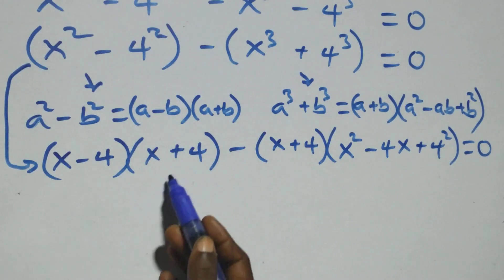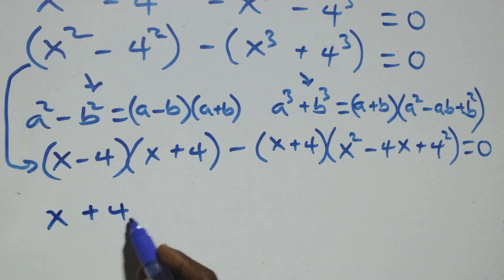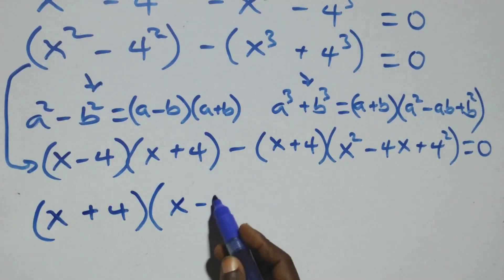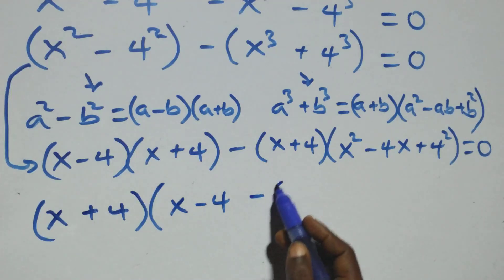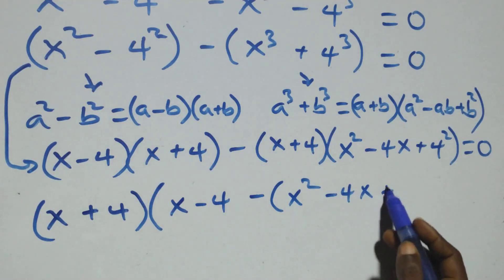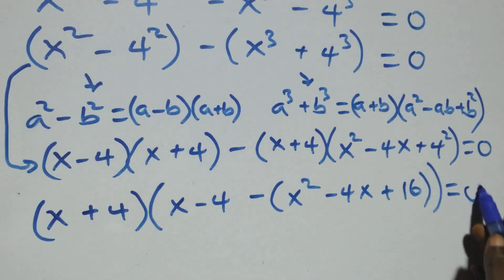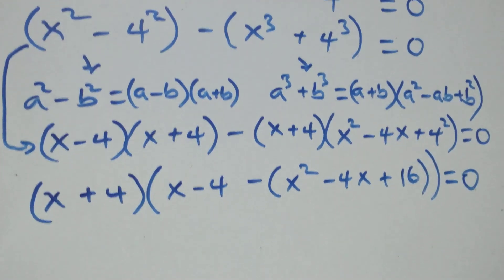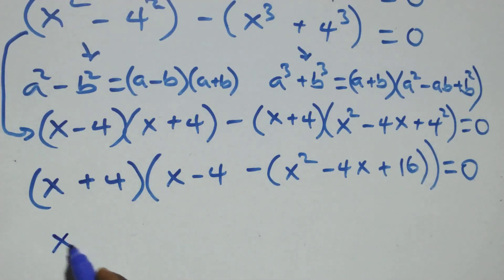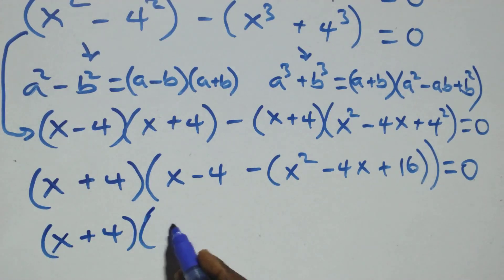This implies x plus 4 is a common factor. We factor it out and this becomes bracket x plus 4 times bracket x minus 4 minus bracket x squared minus 4x plus 16, close bracket, equals zero.